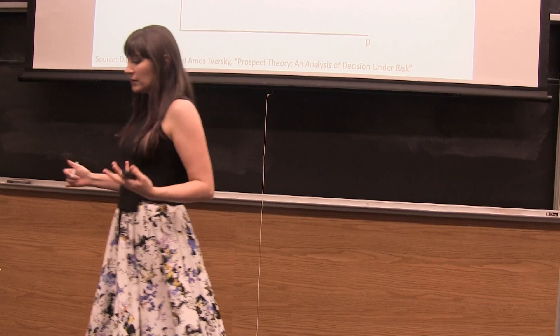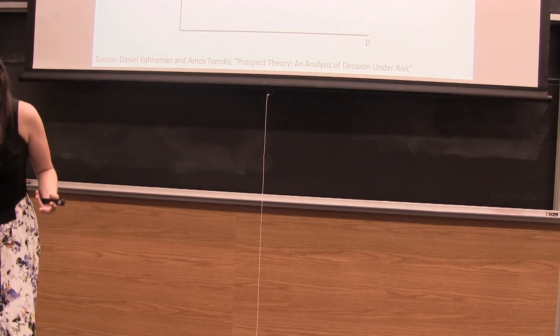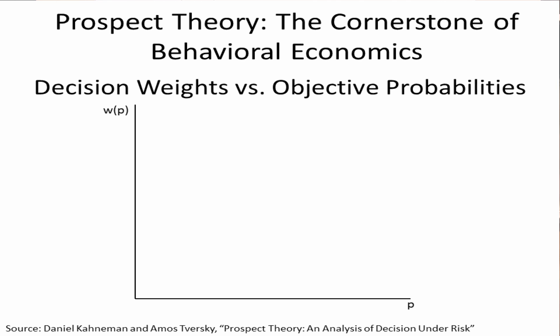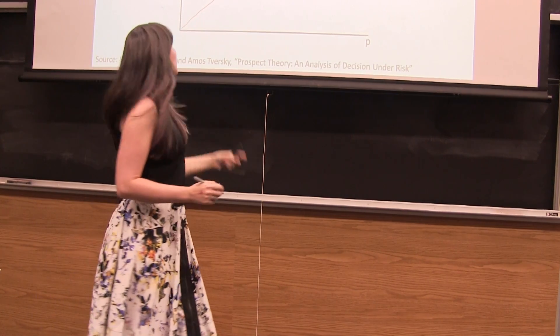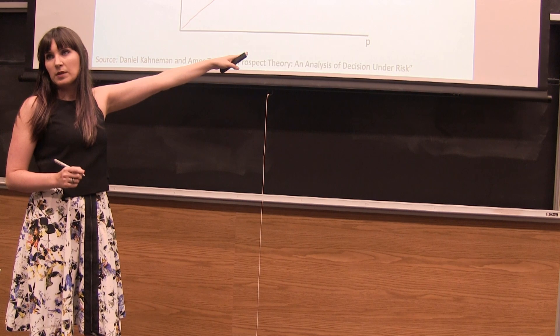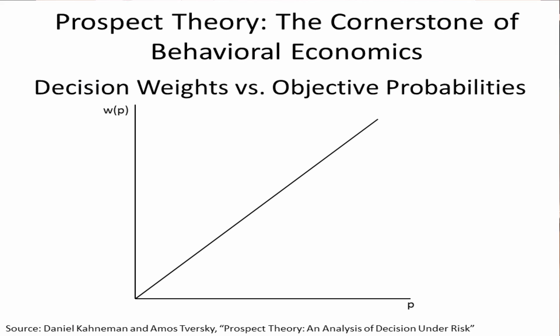We want to think about how decision weights correspond to objective probabilities. We can start by drawing a 45-degree line — this is where the two are always equal. On the horizontal axis we have the objective probability P, and on the vertical axis we have our decision weight, here written as W(P) for weight.